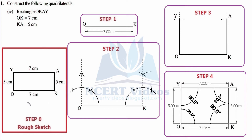After constructing a rough sketch we must check whether we have constructed it correctly. We take every piece of information from the question and match it with our drawn figure. OK is 7 centimeters — indeed it is 7 centimeters, so the opposite side YA is also 7 centimeters. KA is 5 centimeters, the same is true in our drawn figure, so YO equals 5 centimeters. Vertices O, K, A, Y are in anti-clockwise order. The rough sketch is correct — pause and try to construct it on your own.